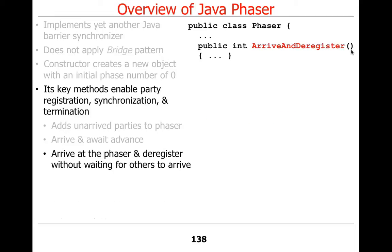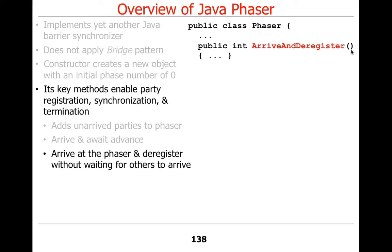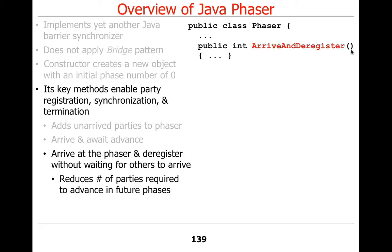There's also arrive and deregister, which is sort of the opposite of register. It's like showing up and saying you don't really want to go after all and canceling. That means there are fewer people in that cohort. You have to arrive in order to deregister, since you already had to have registered yourself. When you arrive and deregister, you're no longer counted as one of the waiting parties, so that drops by one. Future phases don't have to consider you when deciding whether they have enough parties to advance.